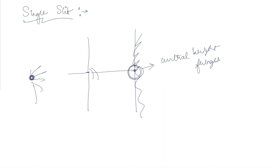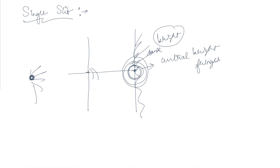Instead, in a dark room what we see is a combination of dark and bright fringes — a central bright fringe accompanied by consecutive dark and bright fringes. This proves that even from a point source, light spreads out, and therefore we can conclude that light is a wave.